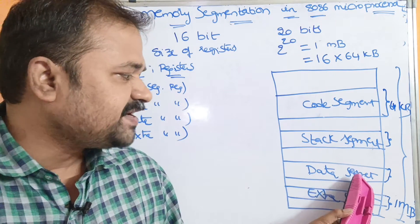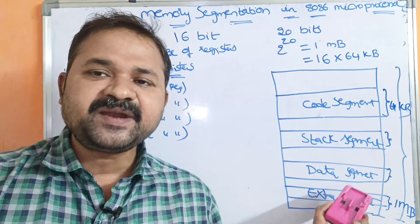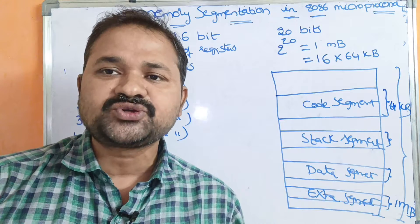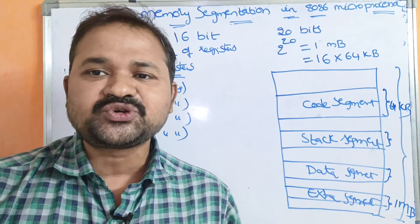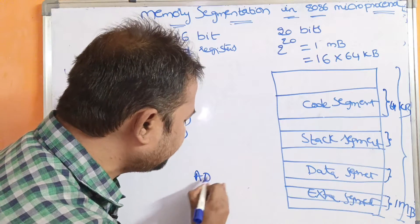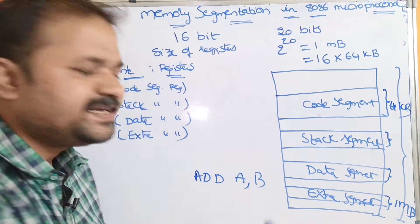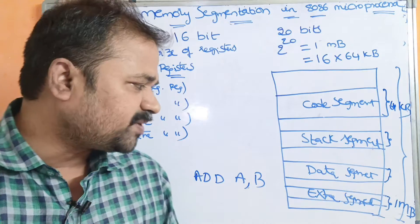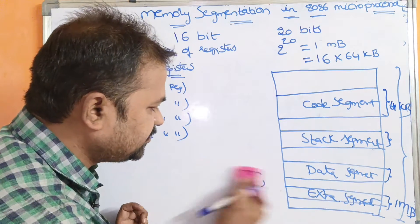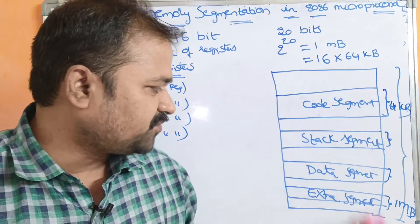The next one is the Data Segment, and the last one is the Extra Segment. The Data Segment and Extra Segment are useful for storing data — that is, the operands. For example, if we have an instruction like ADD A, B, then A and B contain some operands, and those operands will be stored in the Data Segment or Extra Segment.